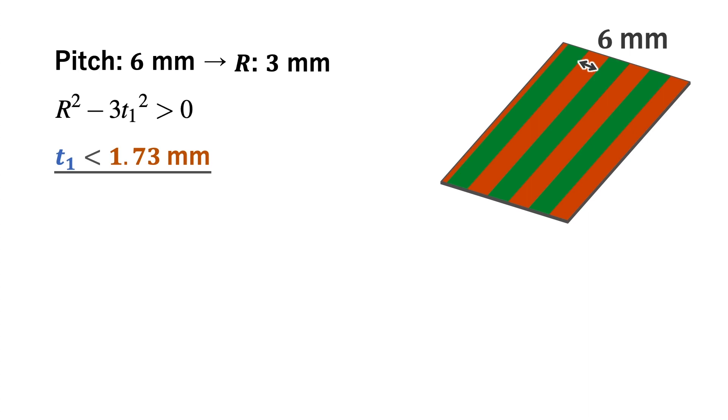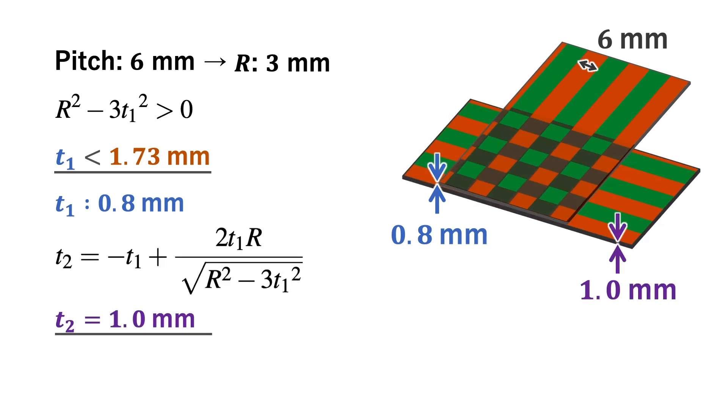In this case, if the upper sheet is 0.8mm thick, the best thickness of the lower sheet is 1.0mm.